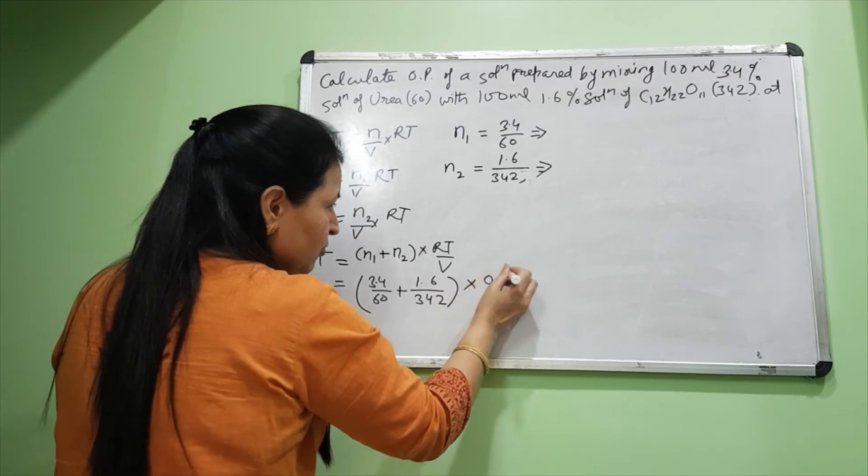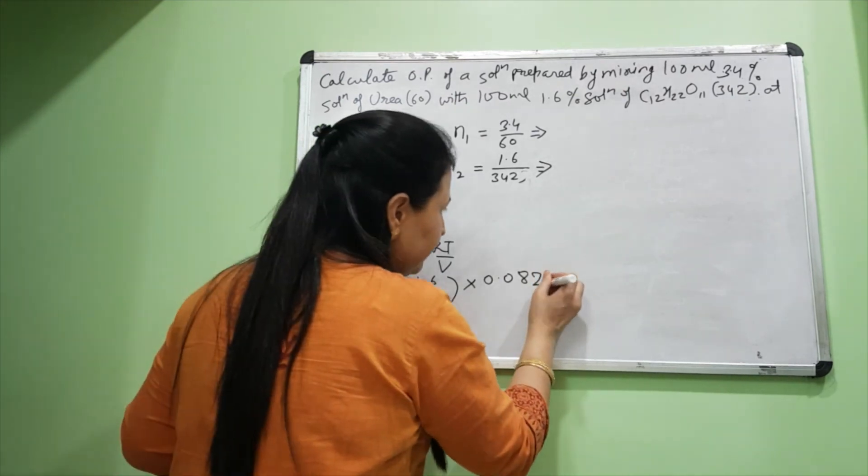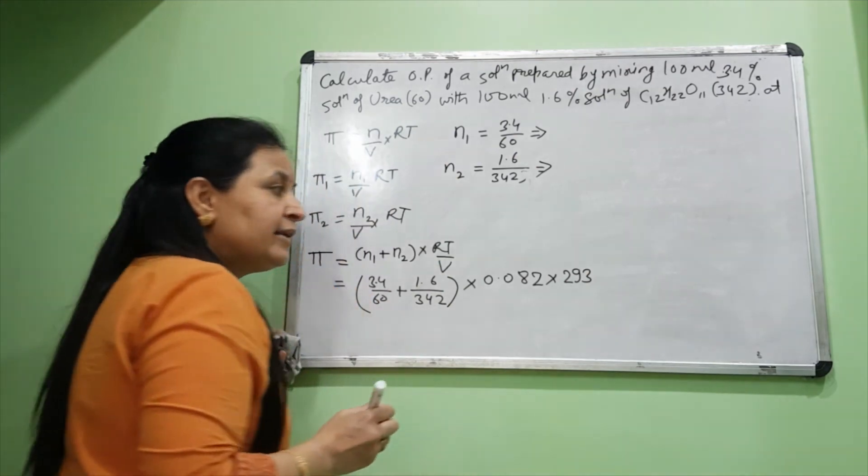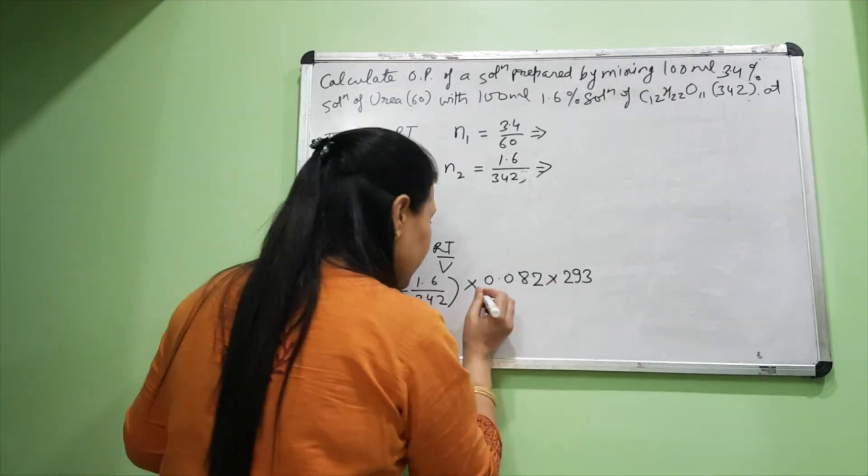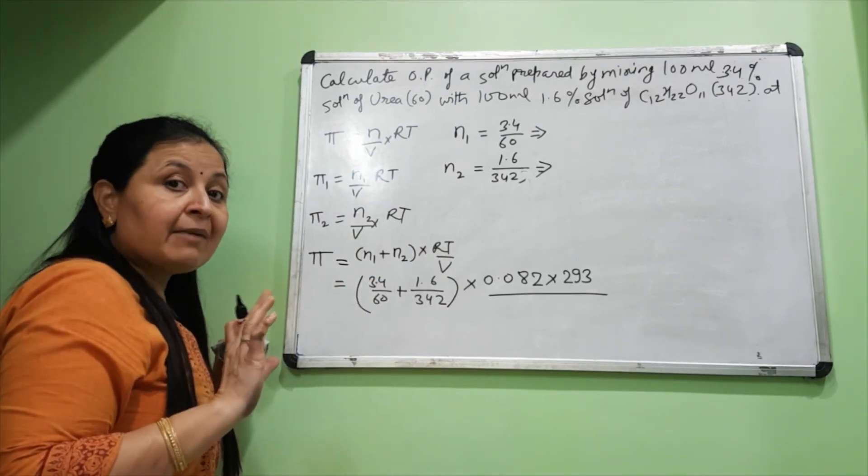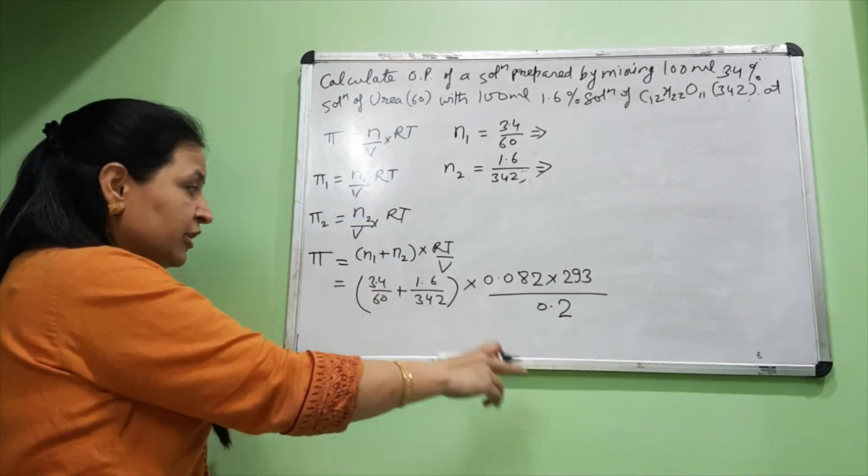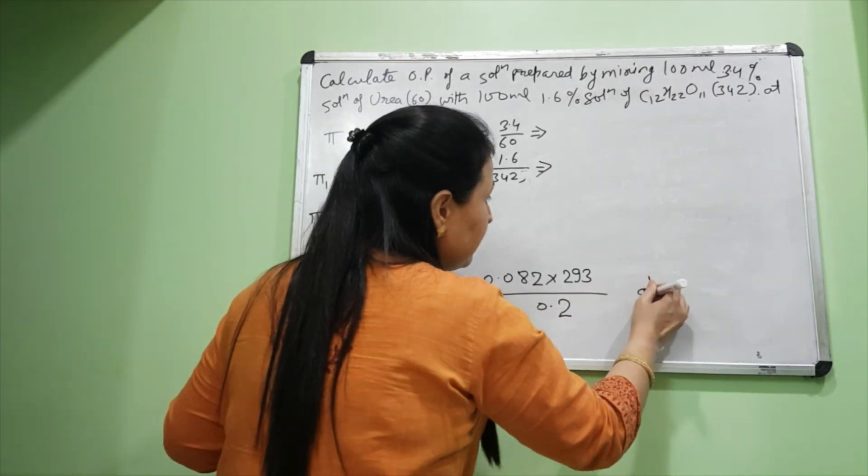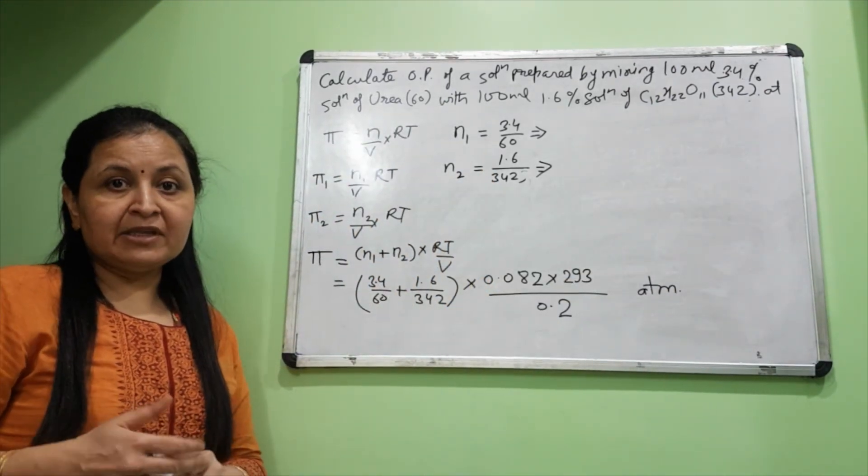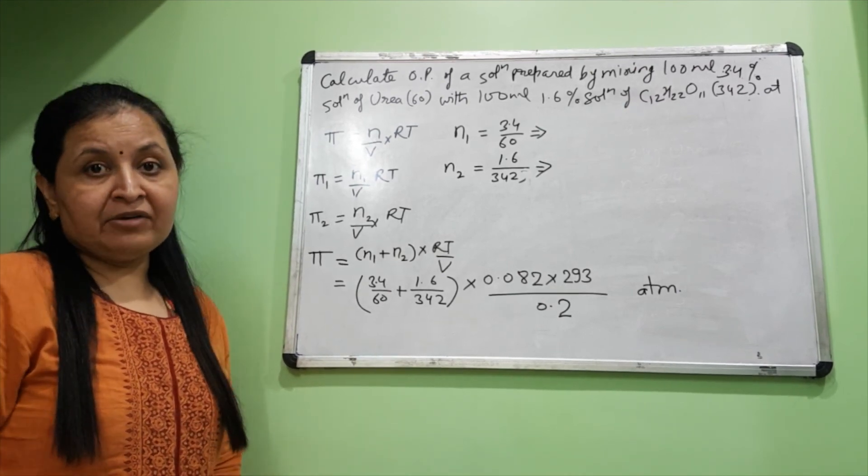Then multiply by R. The value of R is 0.082 or you can take 0.08, both are okay. Multiplied by 20 degrees - you have to convert 20 degrees to kelvin, so it becomes 293 kelvin. Divided by the volume of the solution, which should always be in liters. Your solution is 200 ml, so in liters it becomes 0.2. After you calculate all of this, your answer will come in atmospheres. Please complete your calculations, or you can ask me the answer. You can match your calculations in the next assignment video.